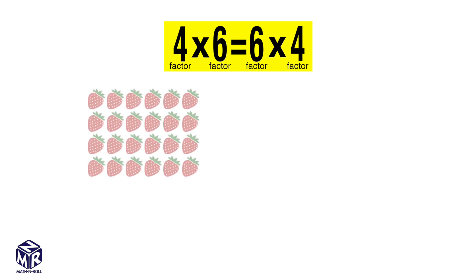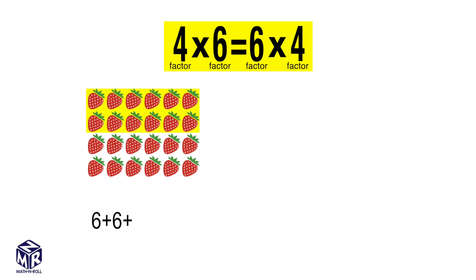Let's take a look at the array of 4 times 6. We have 4 rows and 6 columns, so we have 4 equal groups of 6. 6 plus 6 plus 6 plus 6 equals 24, so 4 times 6 equals 24.